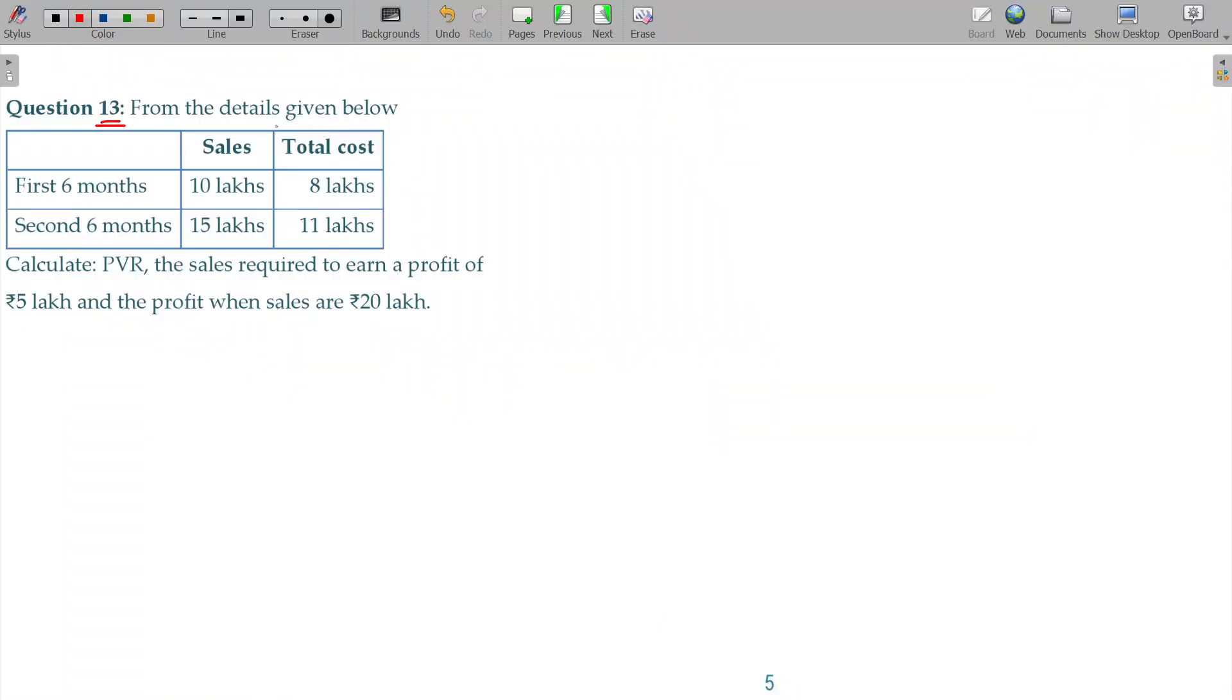Question number 13: From the details given below, calculate PVR and the required period sales and total cost. To find out the PVR when two periods' information is given.